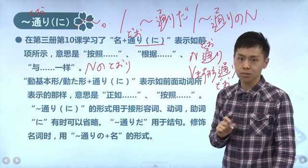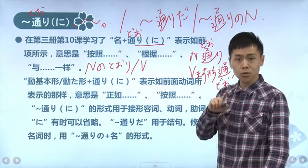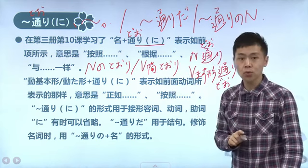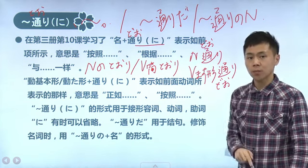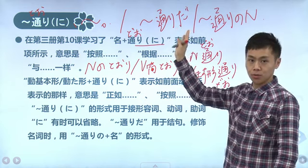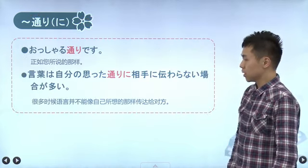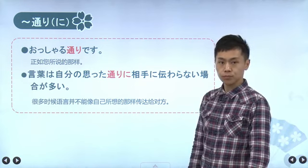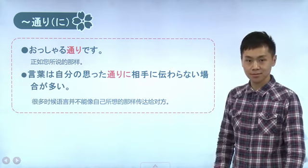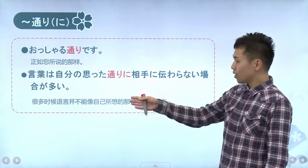如果动词是用MAS形去加「とおり」，同样也构成一个复合词，所以同样要变成浊音变「とおり」。但是如果名词和「とおり」之间有了「の」，名词用「の」去加「とおり」，这时候名词和「とおり」还是两个词，自然就不用浊音变了，还是「とおり」。它表示完全没有变化、没有不同的状态，和前面一模一样。我们来看一下例句：「おっしゃる通りです」，和您所说的是一样的。